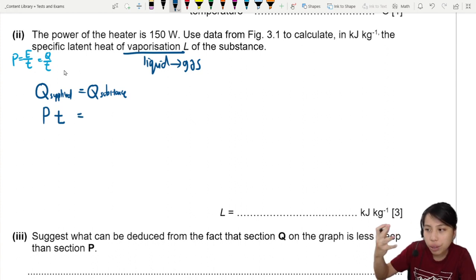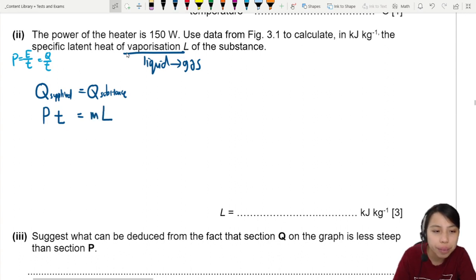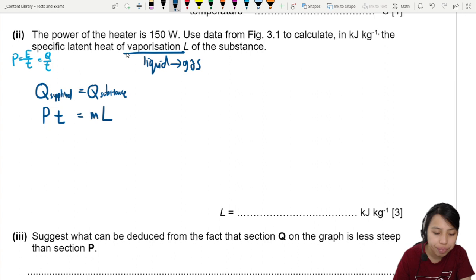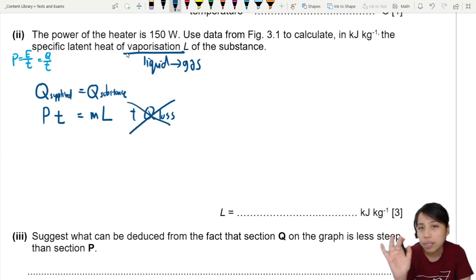As for the substance, when you want to look at the increase in temperature, do we have increase in temperature? Oh, vaporization. If they say vaporization, then you have to use M times L. L is the specific latent heat of the substance. So ML. Do we need to include heat loss? Sometimes when you add Q loss, don't need. Because they said earlier this experiment is perfectly insulated. No heat loss. So just this.